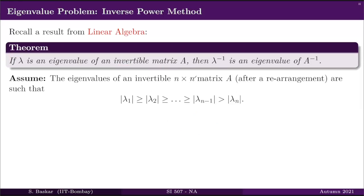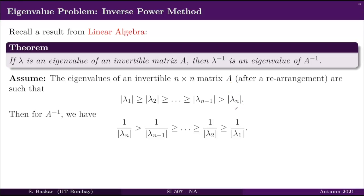Let us assume that the eigenvalues of an invertible matrix A are ordered such that |lambda_1| >= |lambda_2| >= ... >= |lambda_n|, where lambda_n is the smallest eigenvalue in absolute value. I may just say smallest eigenvalue, but I mean smallest in absolute value. If the smallest eigenvalue is unique, then you can look at the corresponding eigenvalues of A inverse, where 1/lambda_n will become the unique dominant eigenvalue of A inverse.